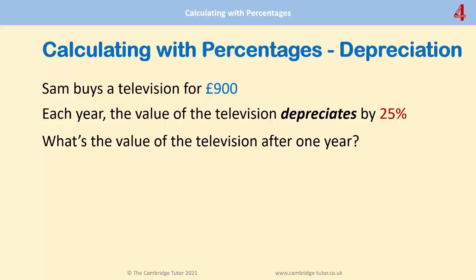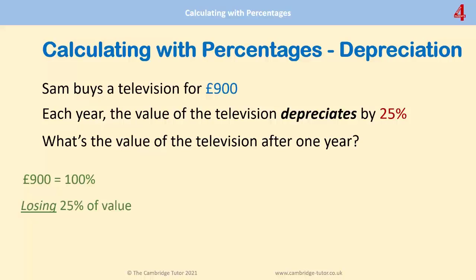Here's one more like that. Sam buys a television for £900. Each year the value of the television depreciates by 25%. What's the value of the television after one year? So £900 is 100% of the amount the television costs, and it's losing 25% of its value. 100% take away 25% — that's 75%.